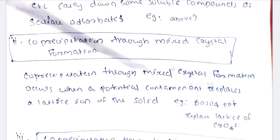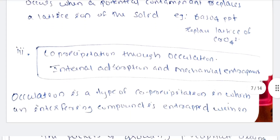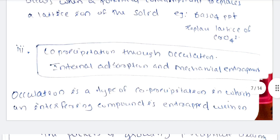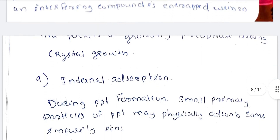Co-precipitation through mixed crystal formation occurs when a potential contaminant replaces a lattice ion of the solid. For example, in a BaSO4 precipitate, CrO4 replaces the crystal lattice ion with BaSO4. Next, co-precipitation through occlusion: occlusion means internal adsorption and mechanical entrapment. Occlusion is a type of co-precipitation in which an interfering compound is entrapped within the growing precipitate, leading to crystal growth issues.